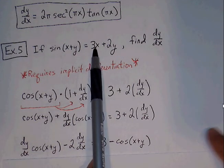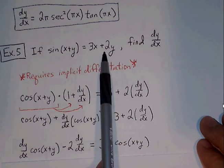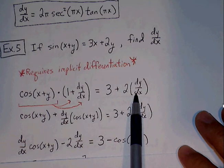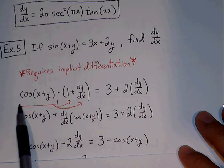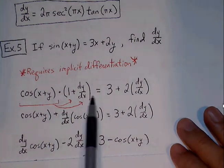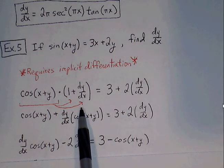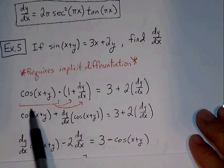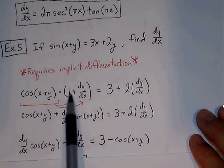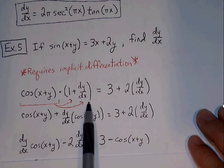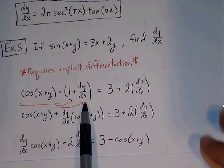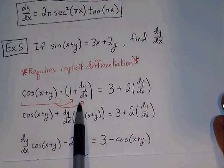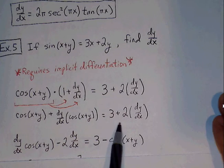Equals: 3x becomes 3, and 2y becomes 2 dy/dx. Now we distribute cosine of x plus y through the parenthesis to separate the terms, giving us cosine of x plus y plus dy/dx times cosine of x plus y, equal to 3 plus 2 dy/dx.